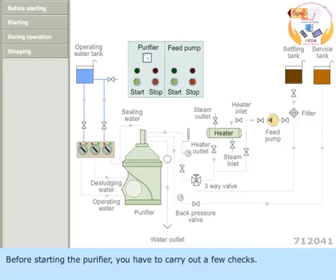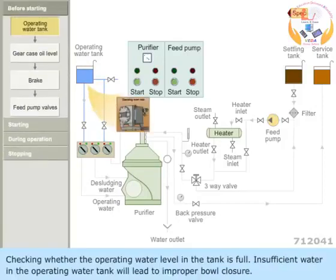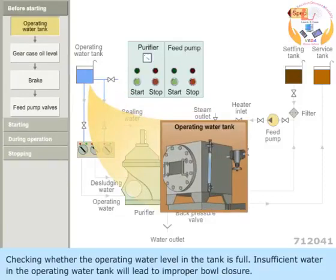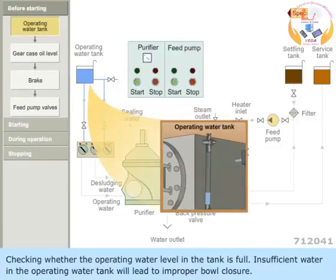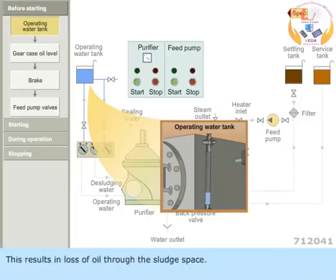Before starting the purifier, you have to carry out a few checks. Check whether the operating water level in the tank is full. Insufficient water in the operating water tank will lead to improper bowl closure. This results in loss of oil to the sludge space.